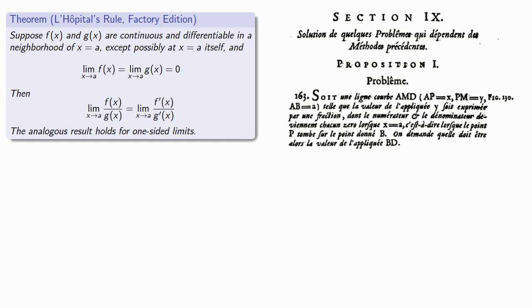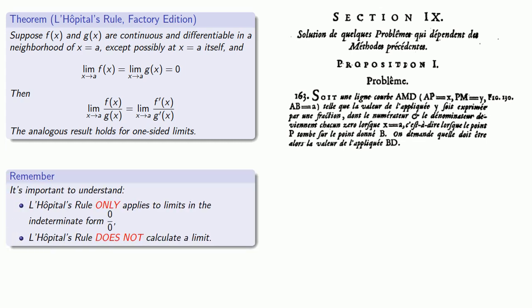And an analogous result holds for one-sided limits. Now, it's very important to understand and remember that L'Hôpital's rule only applies to limits of the indeterminate form 0 over 0, and L'Hôpital's rule does not actually calculate a limit. Rather, it says that one limit is the same as another limit.